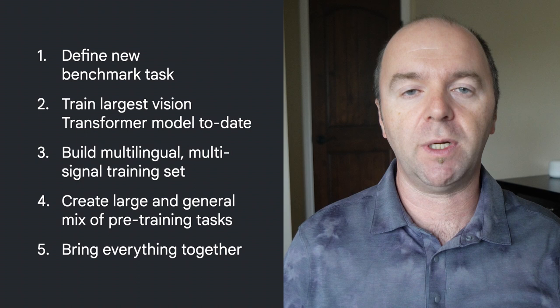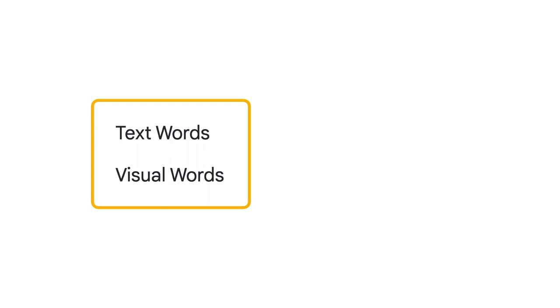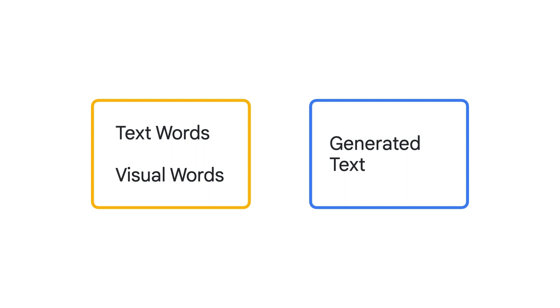The result is a single encoder-decoder transformer model. The encoder takes inputs of two types, or modalities: text words — which we would usually call prompts — and visual words, which are vectors from the vision transformer that represent the content of the input image in a format that the transformer encoder can digest. The decoder generates text in the language specified by the prompt.